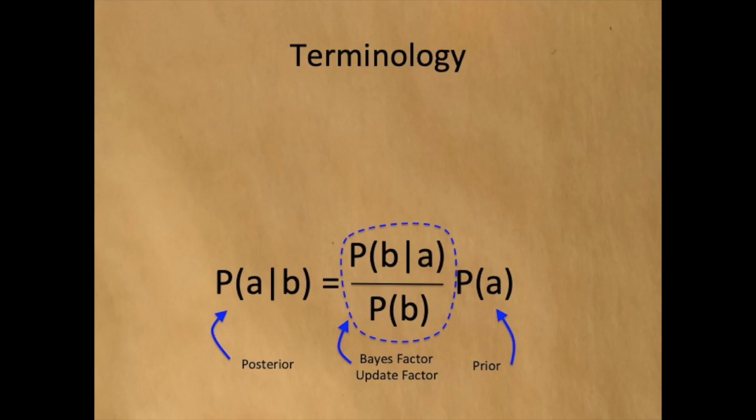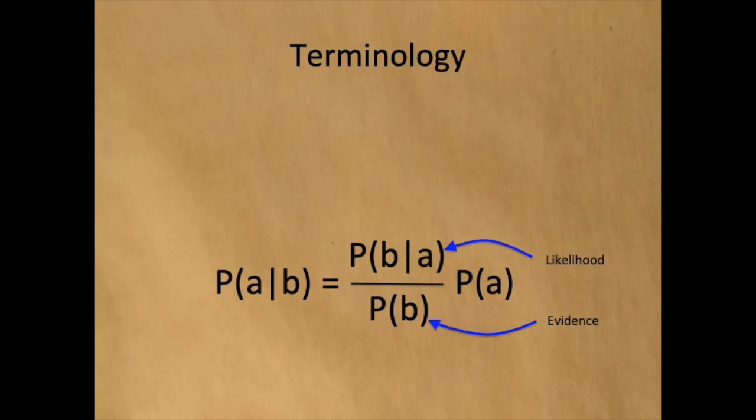Side note on terminology. The probability of A given B is called the posterior. The probability of A is called the prior, because we're going to convert the probability of A into the probability of A given B. The fraction — probability of B given A divided by the probability of B — is called the Bayes factor, or the update factor. The numerator is called the likelihood because it's how likely was B to happen given that A was true. The denominator is called the evidence because it's what literally happened — what we saw — the evidence that occurred.